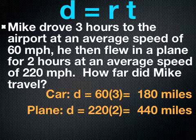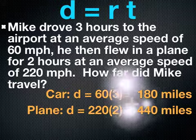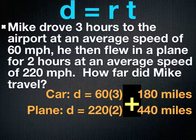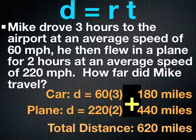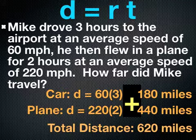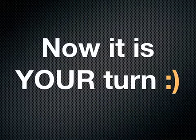To find how far he traveled altogether, I would need to add these two values together. 180 plus 440 is, that gives you the total distance of 620 miles. So how far Mike drove and flew altogether was 620 miles. Now it's going to be your turn to try the distance formula. You will have a worksheet for homework today.